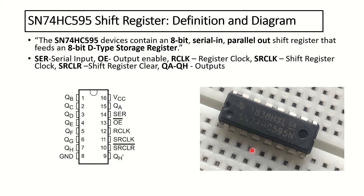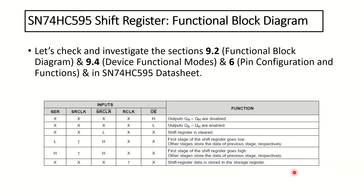Now let's see how these pin states affect the shift register. This table is taken from the data sheet and summarizes the operating principle of the device. You need to set the OE active low pin to ground in order to enable output. There may be times that you don't want to get the output, so you can set this pin's voltage high. If you want to clear the content of the shift register, you should send the active low SRClear to low.